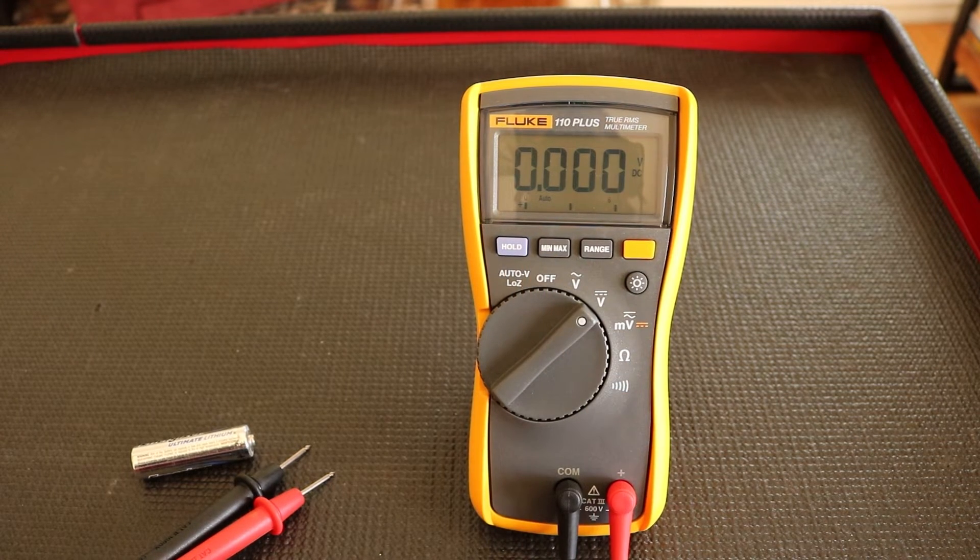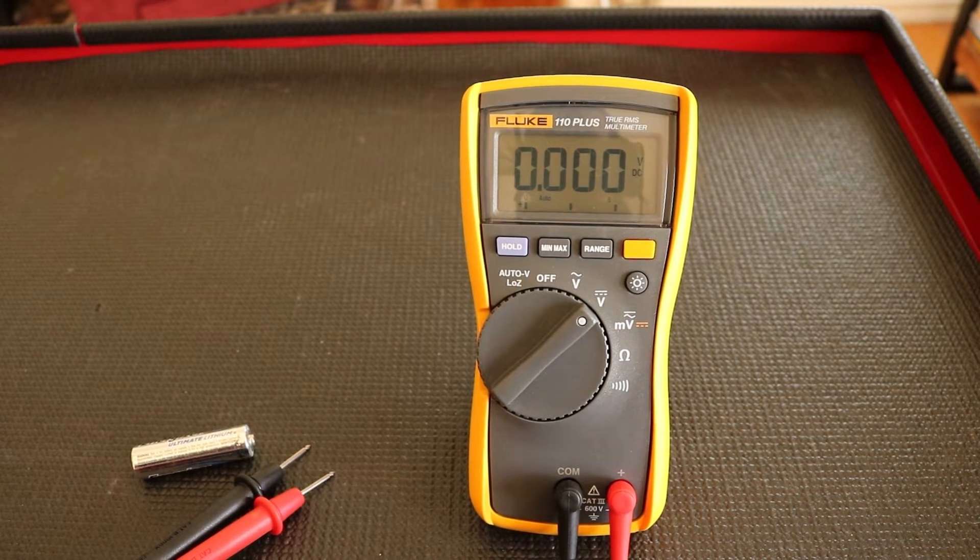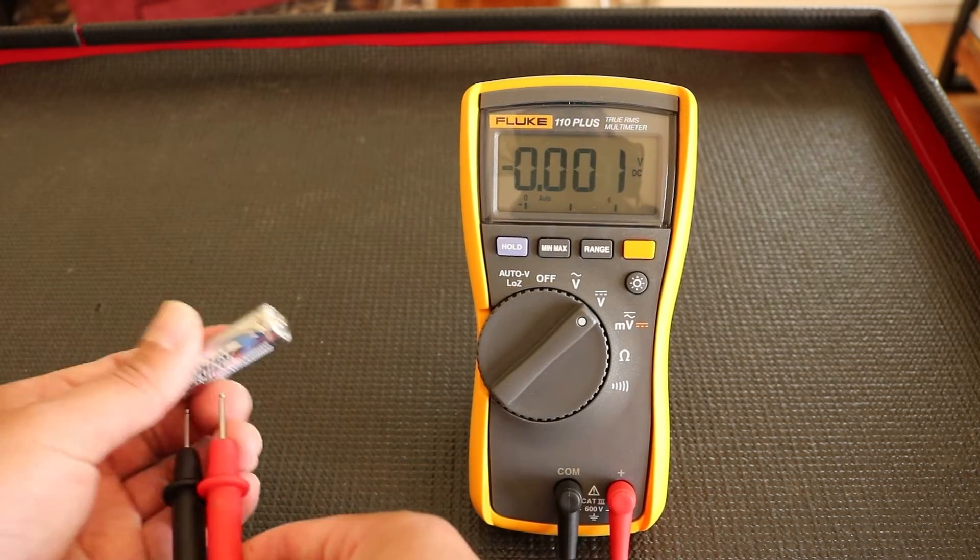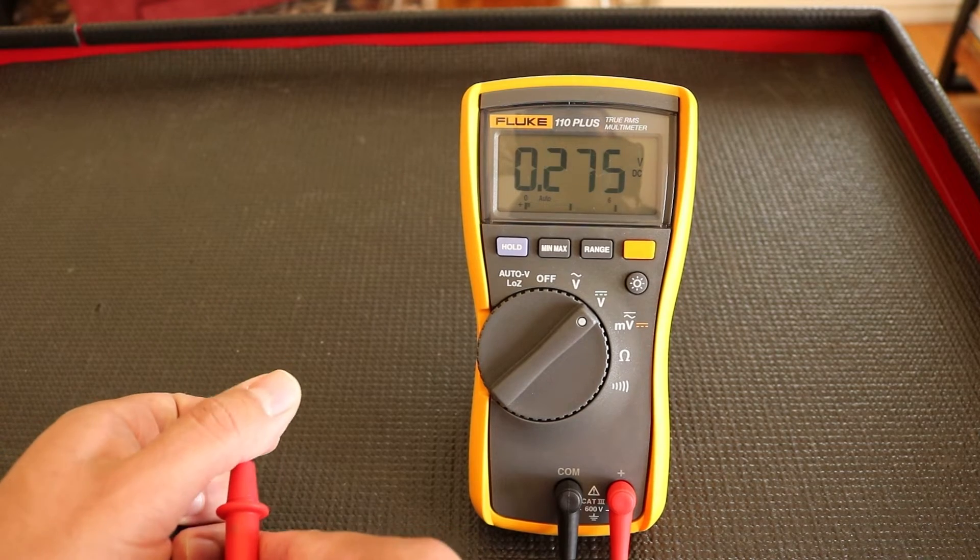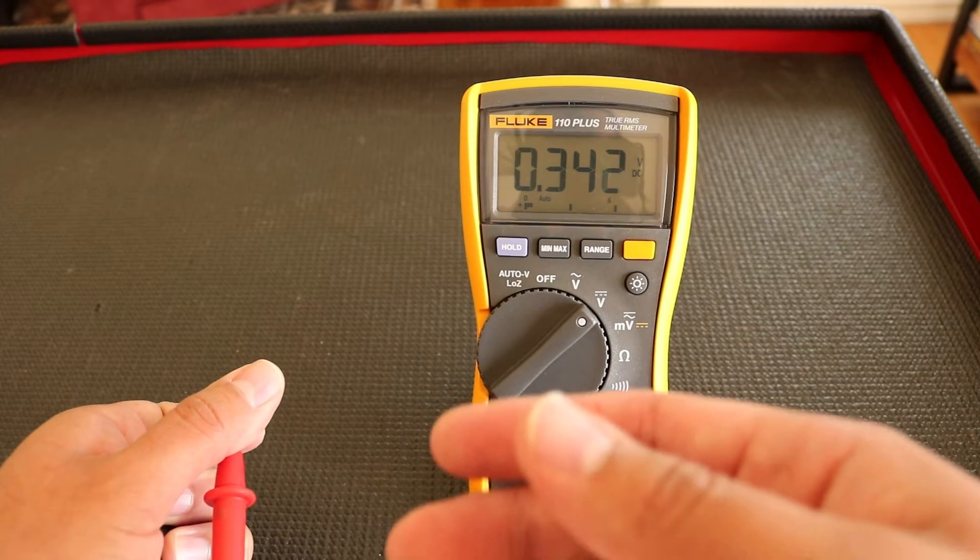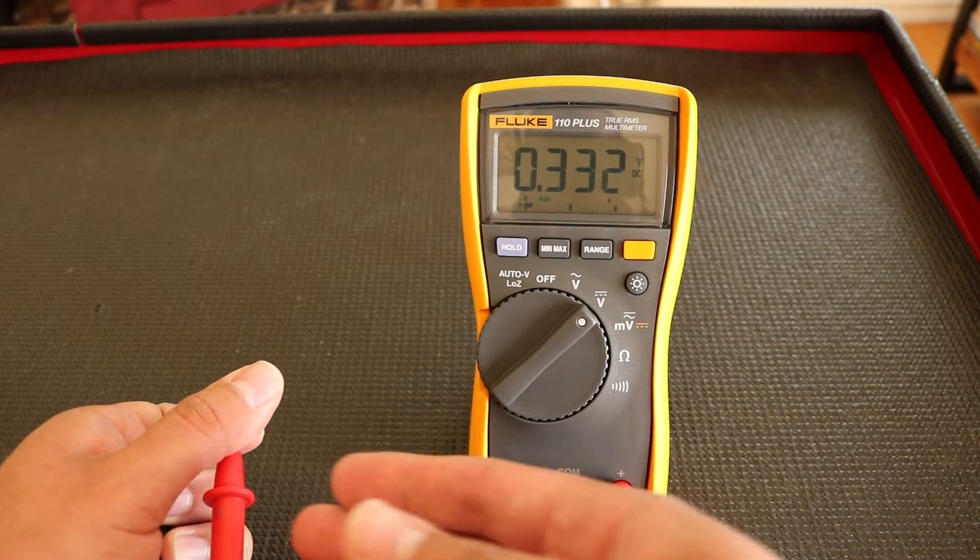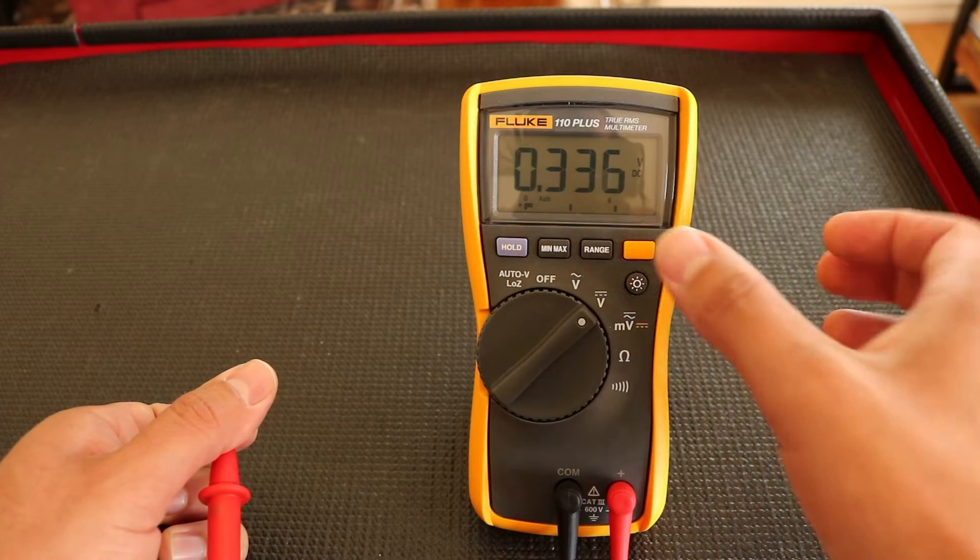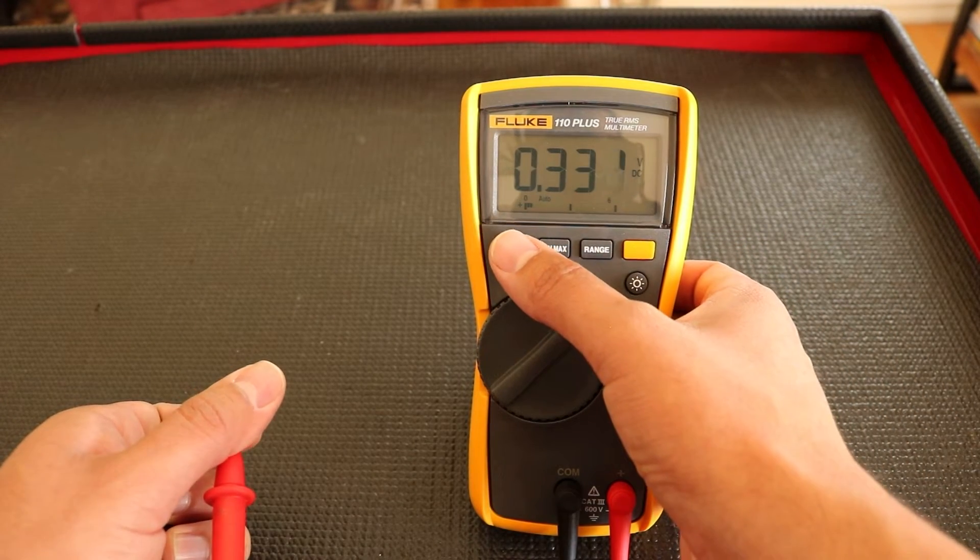The hold button essentially freezes the display. So if you're taking a measurement of something, as you can see it's a little erratic because I'm moving the lead around. If I held the lead in place with the battery, it would give us a precise measurement. But I want to give an erratic reading so I can show you what the hold does.